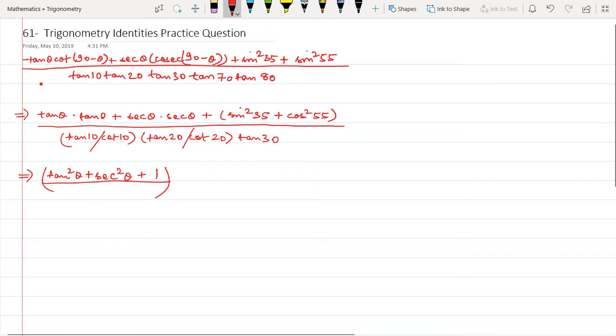Sin 30, that is 1/2, divided by cos 30, that is root 3 by 2. So this will be 1 upon root 3.